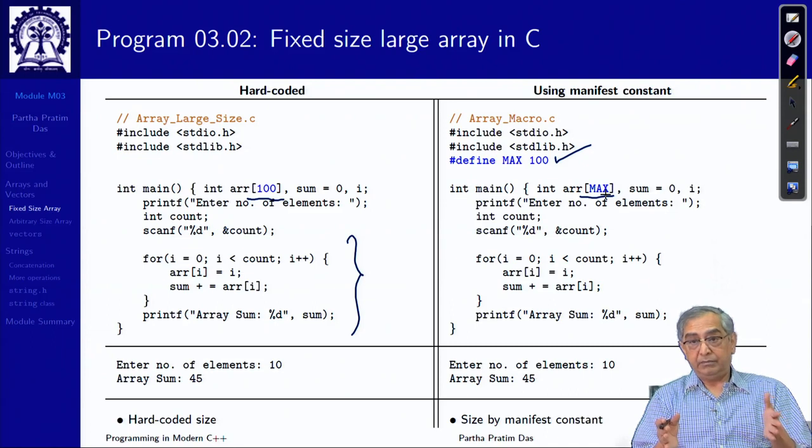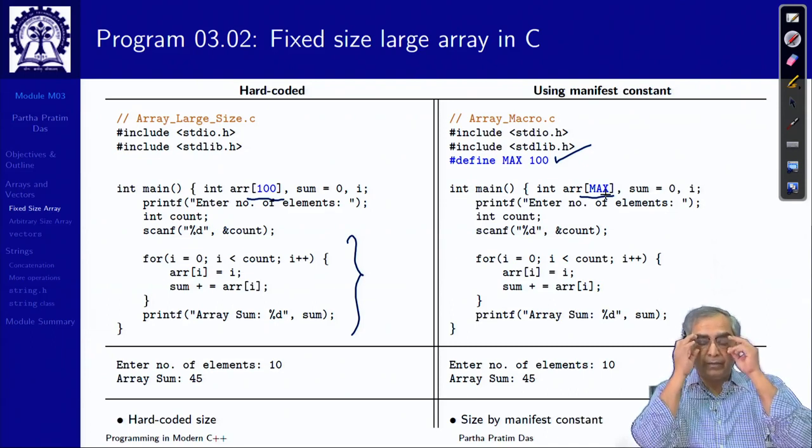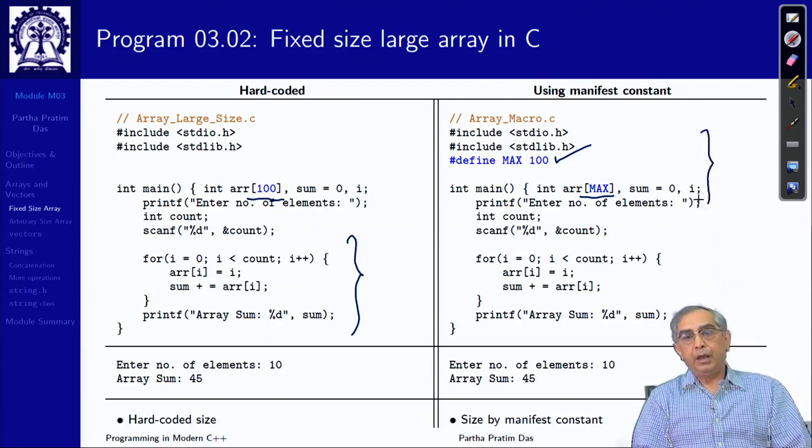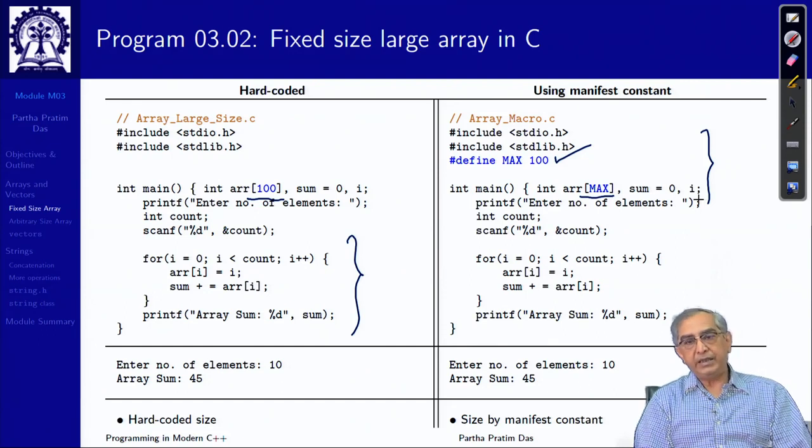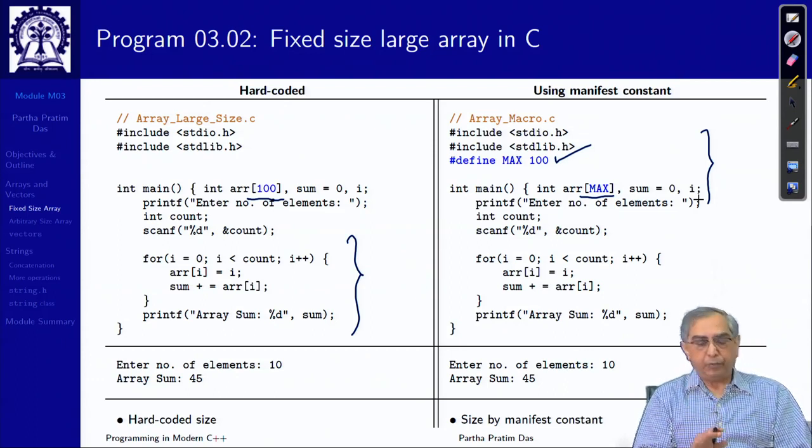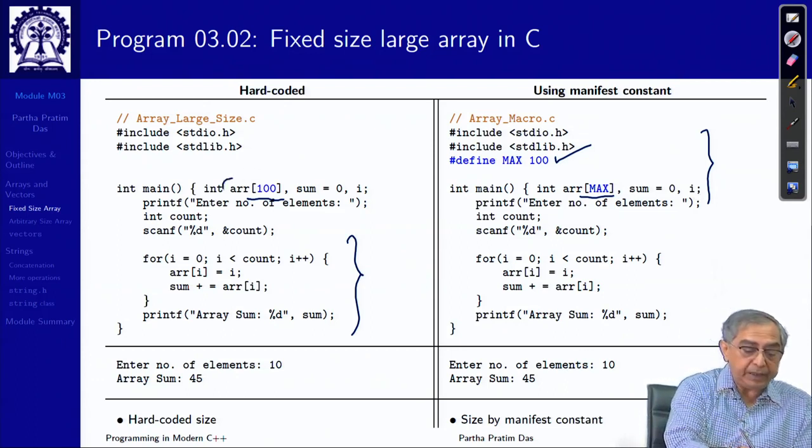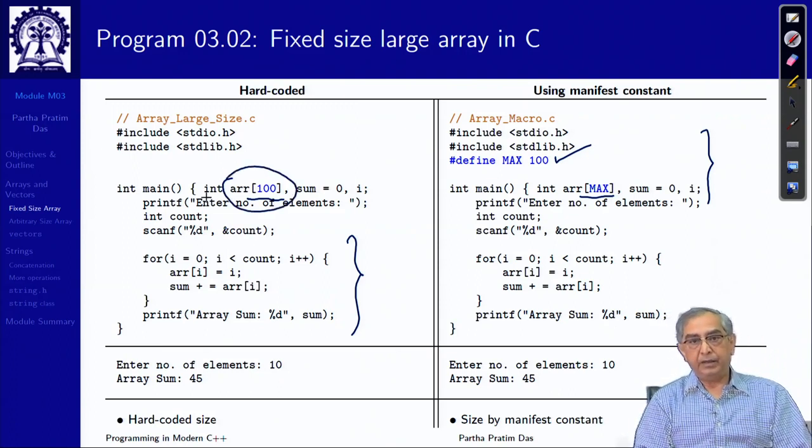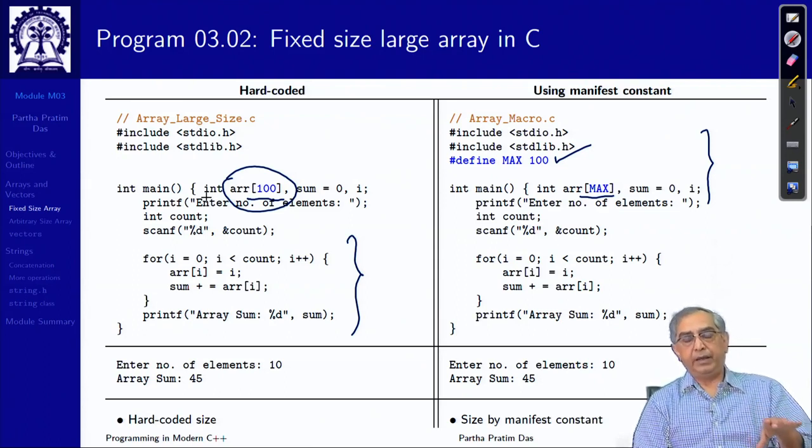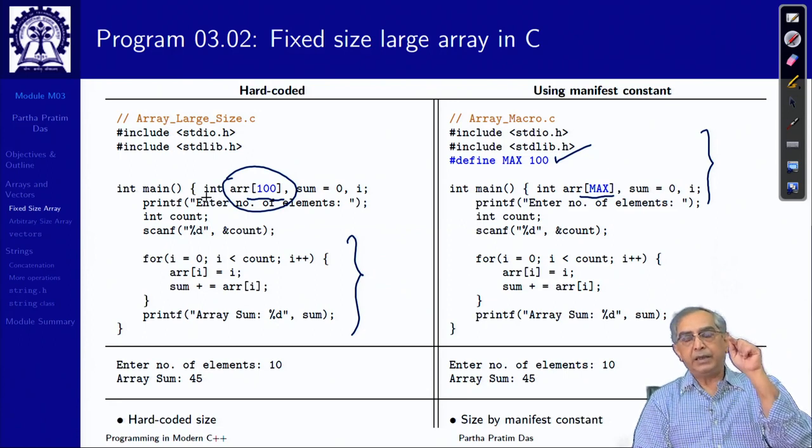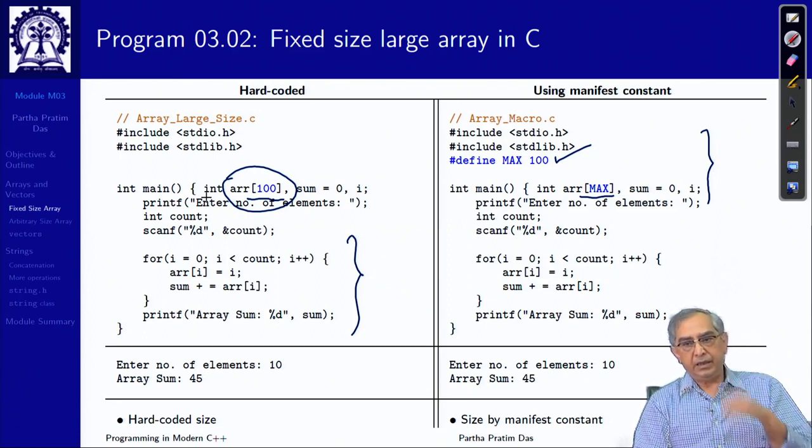The other option is to put a manifest constant defining the size and then use that. Both are C. We often preferred this because if we in future need to change the size, either increase it or decrease it, then it becomes quite an exercise to go deep inside the code and find out where this size has been defined.